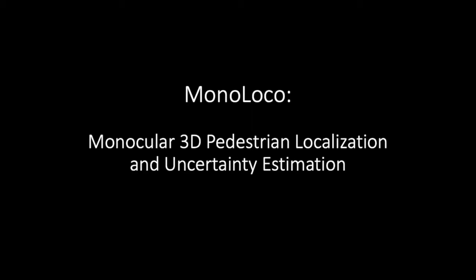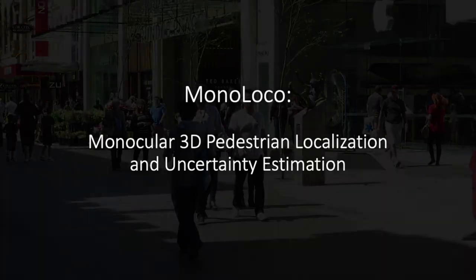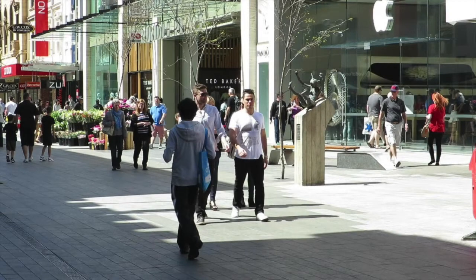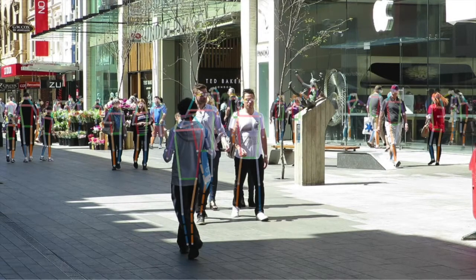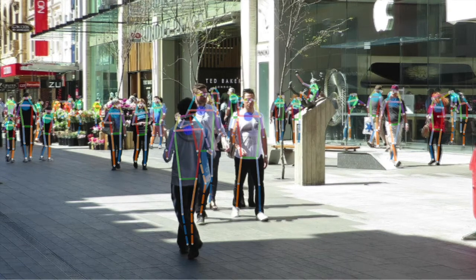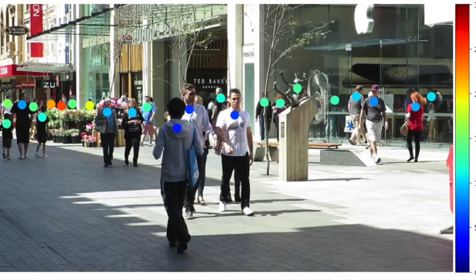In this video, we illustrate the results of our method for monocular 3D pedestrian localization and uncertainty estimation. Starting from a single RGB image, we first detect the two-dimensional human joints of pedestrians in the scene. The 2D joints are the input of a neural network which estimates the 3D localization of pedestrians.